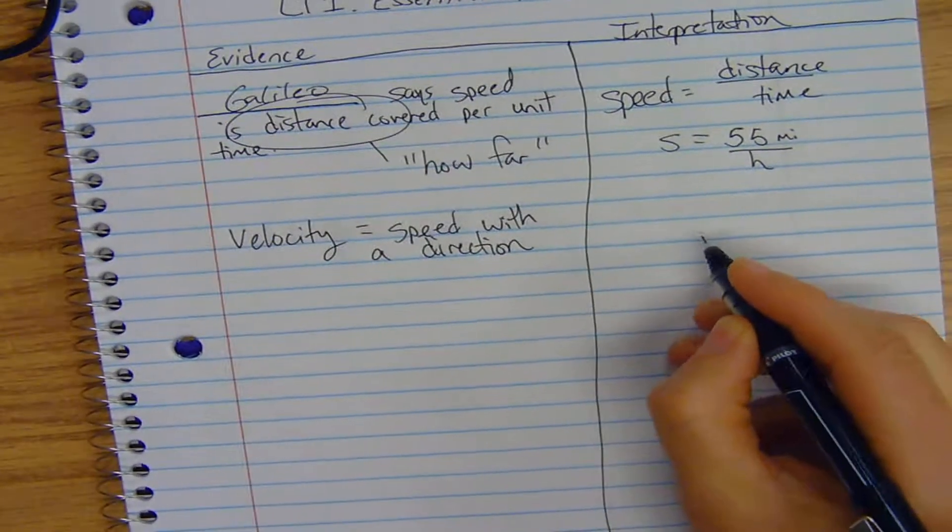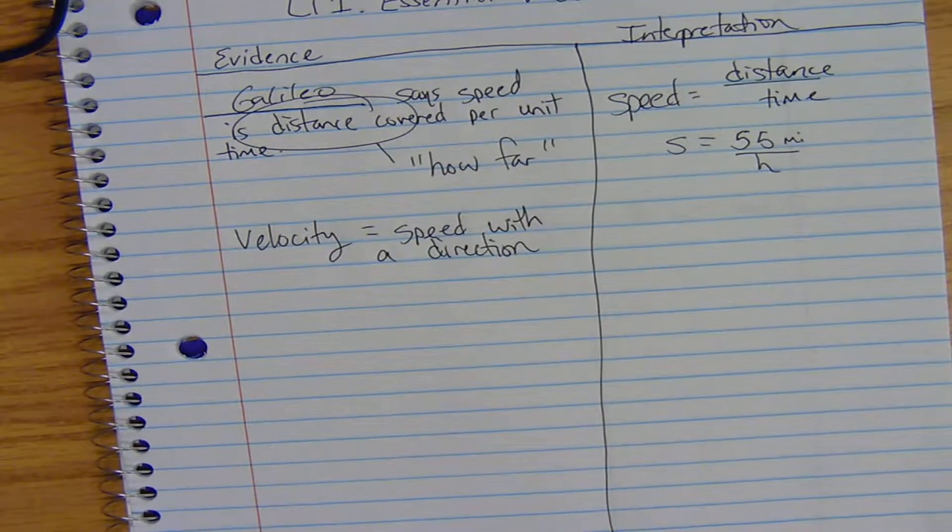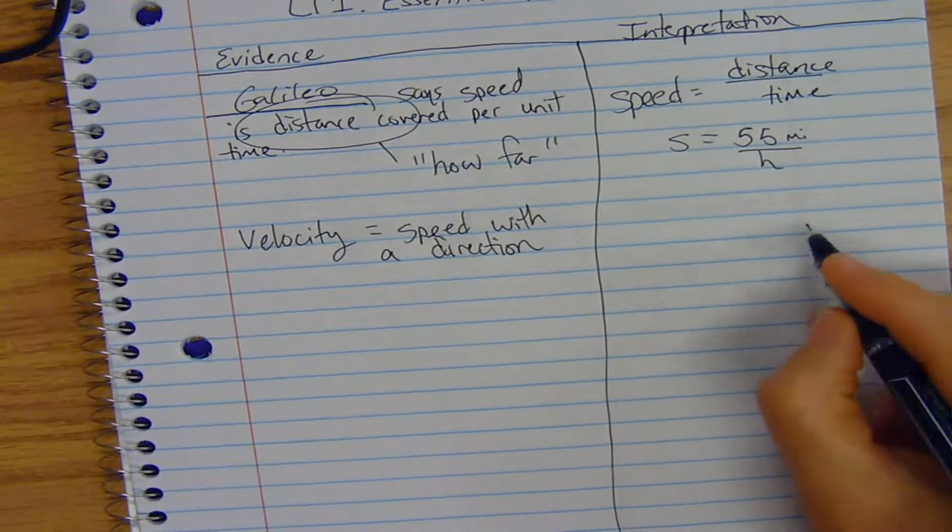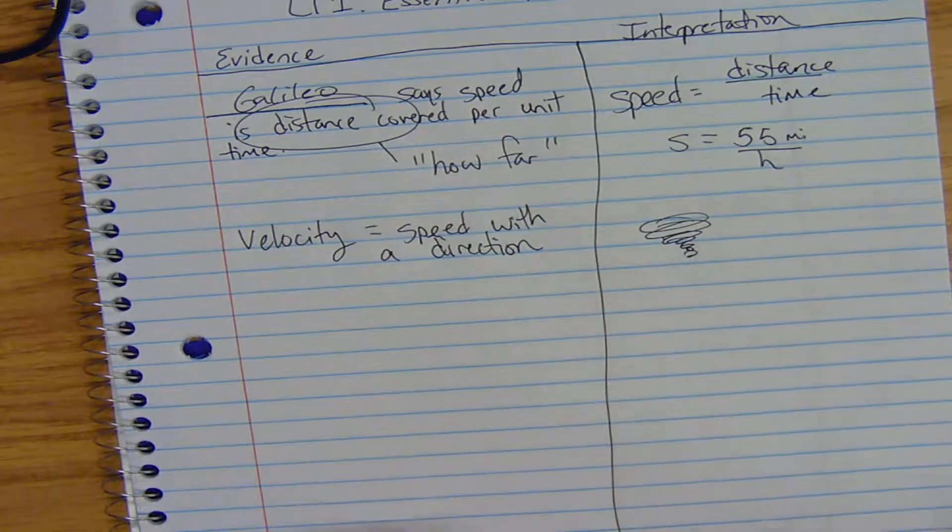They're never going to say that Justin Verlander's fastball traveled 98 miles per hour in a 370 degree trajectory direction. They're just never going to say that, even though they'll throw out the velocity. So, it's got to be speed with a direction.